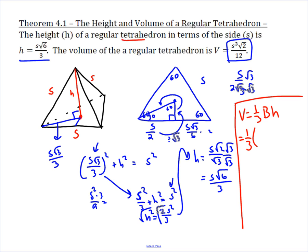Well, we don't know the base, but we do know the height is s root 6 over 3. And the base is easy to find because it's just an equilateral triangle with side length s, and there's a nice formula for the area of an equilateral triangle with side length s, and that is side squared root 3 over 4.